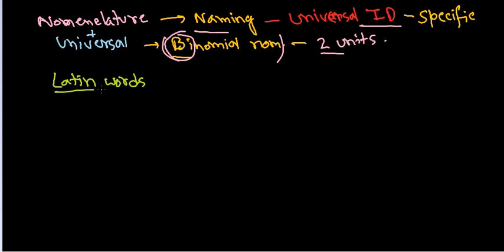It does definitely have a meaning in that naming. Binomial nomenclature means it will consist of two units. Two units means, let's say this is the first unit, let's say this is the second unit, two different units.